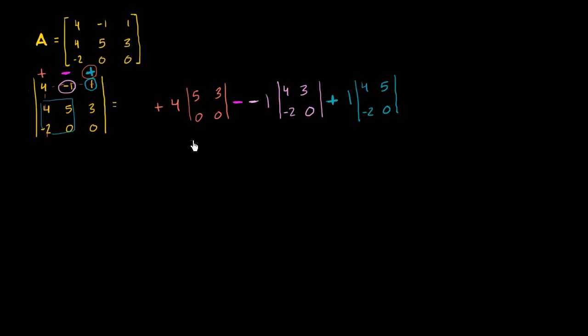So the determinant right over here is going to be 5 times 0 minus 3 times 0, and all of that is going to be multiplied times 4. Well, this is going to be 0 minus 0, so this is all just 0. So 4 times 0 is just 0. So this all simplifies to 0.